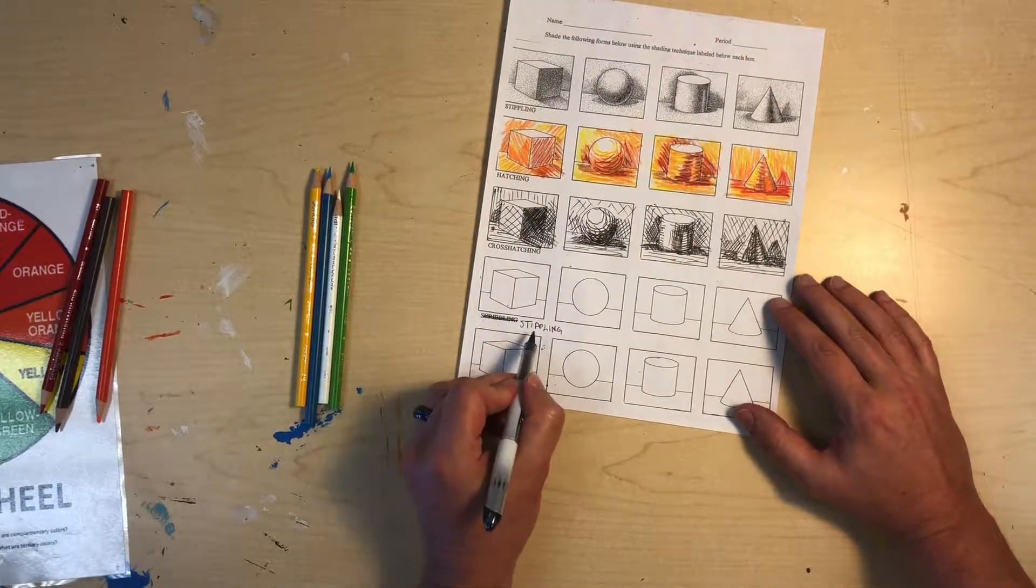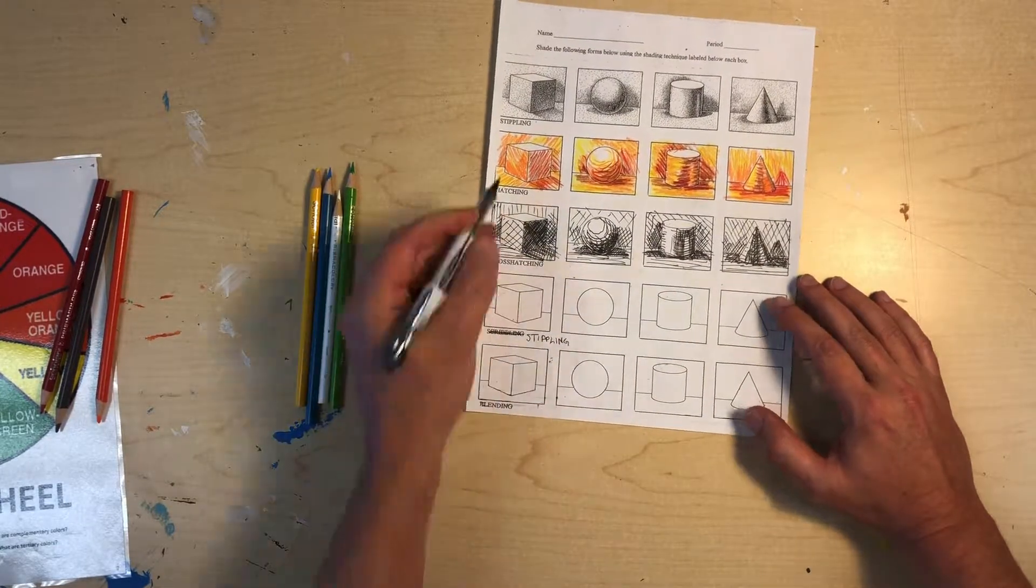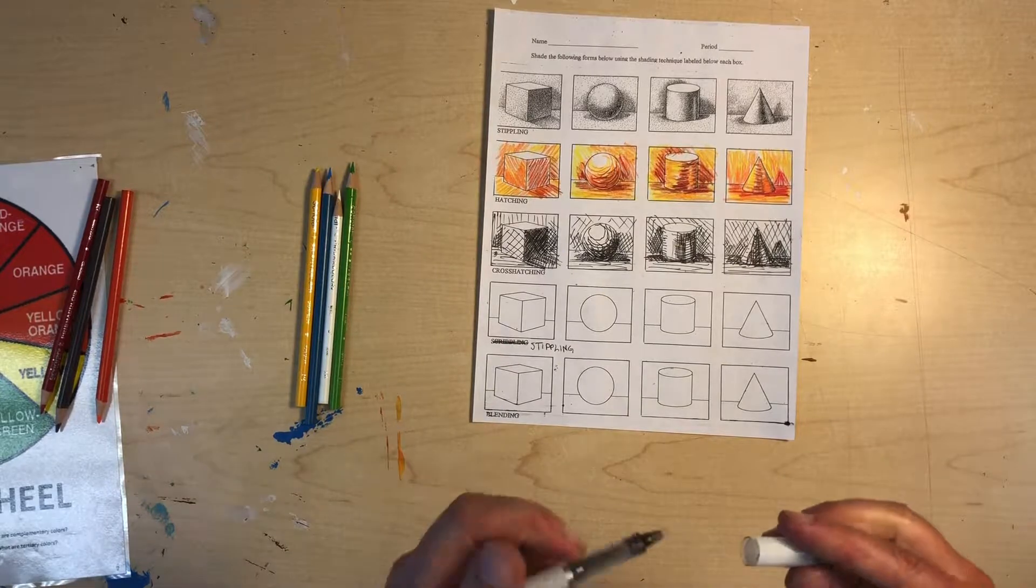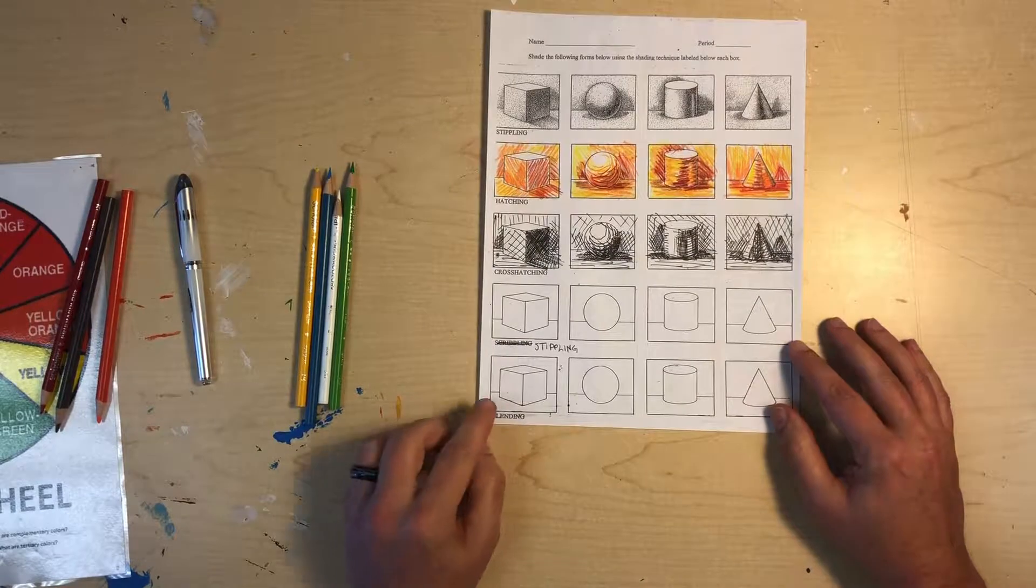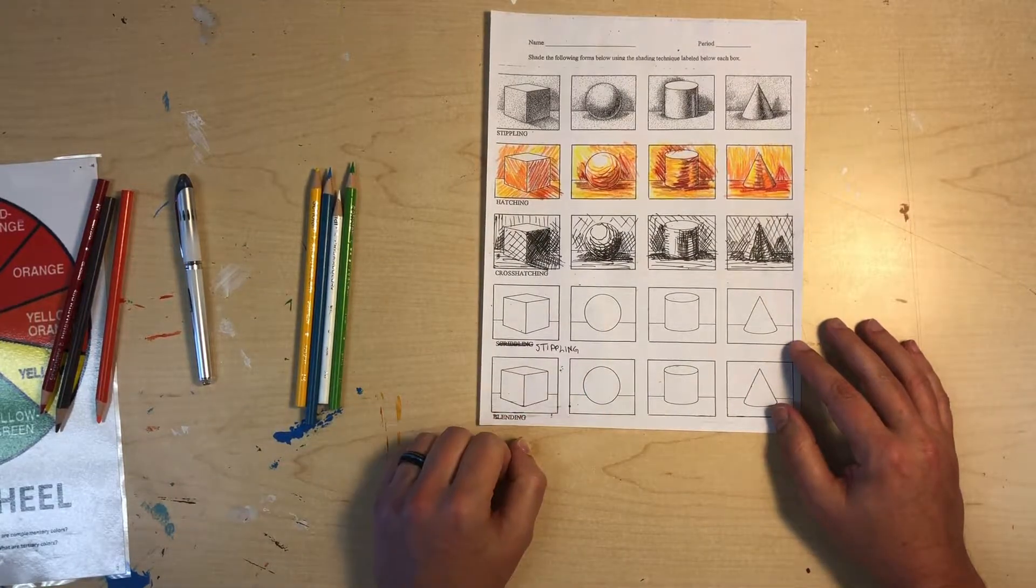So I marked out scribbling, I write in stippling, alright? And stippling means just made up of little dots like the painters, some of the post-impressionist painters did, where they were painting with little dots.